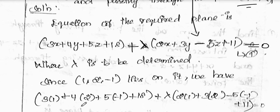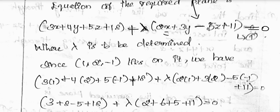The point is x = 1, y = 2, z = -1. This is the structure of the plane — the total plane equals 0. So let's add: 3×1 = 3, 4×2 = 8, 5×(-1) = -5, plus 18. Then add lambda times: 2, 3×2 = 6, -5×(-1) = +5, plus 11.